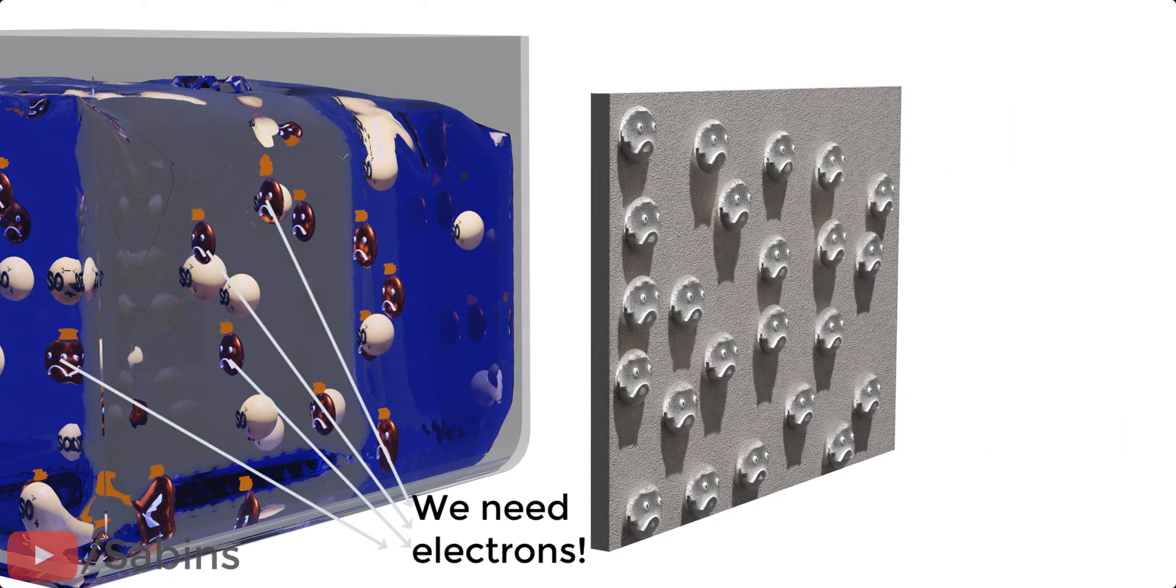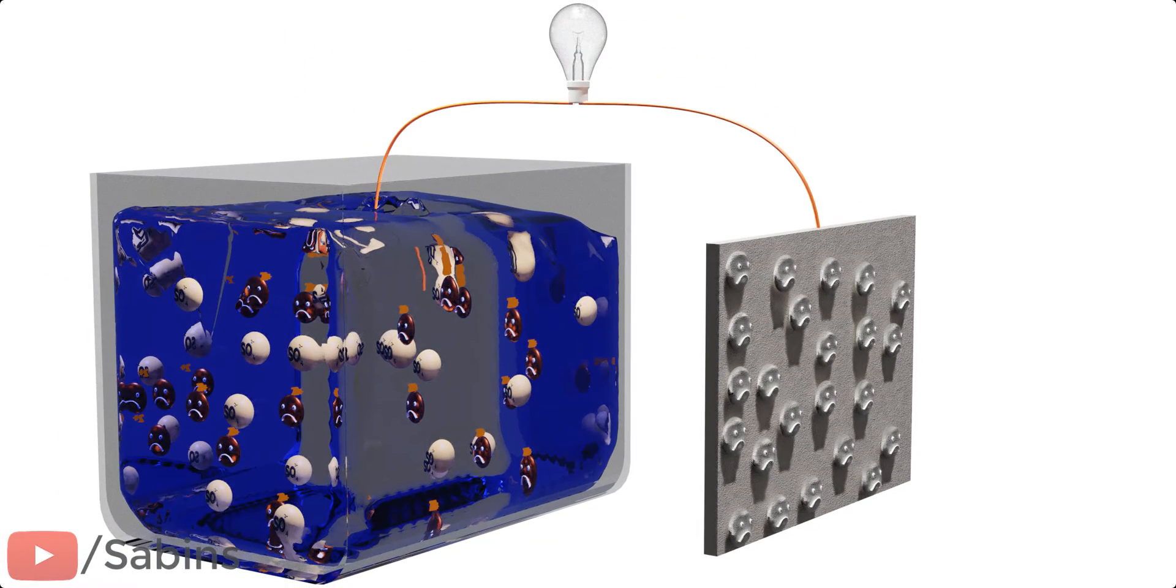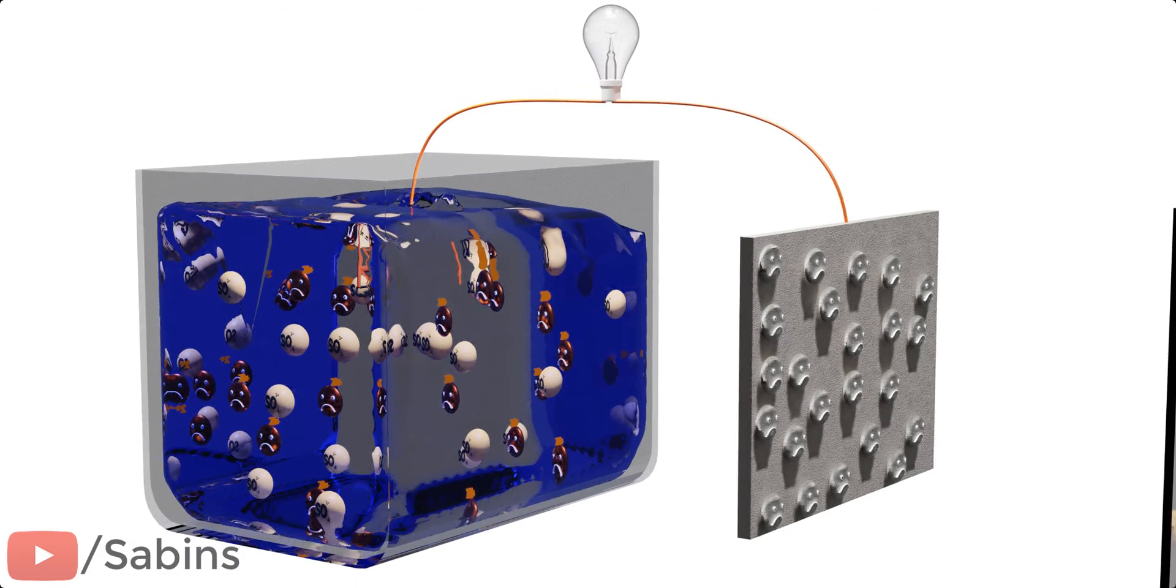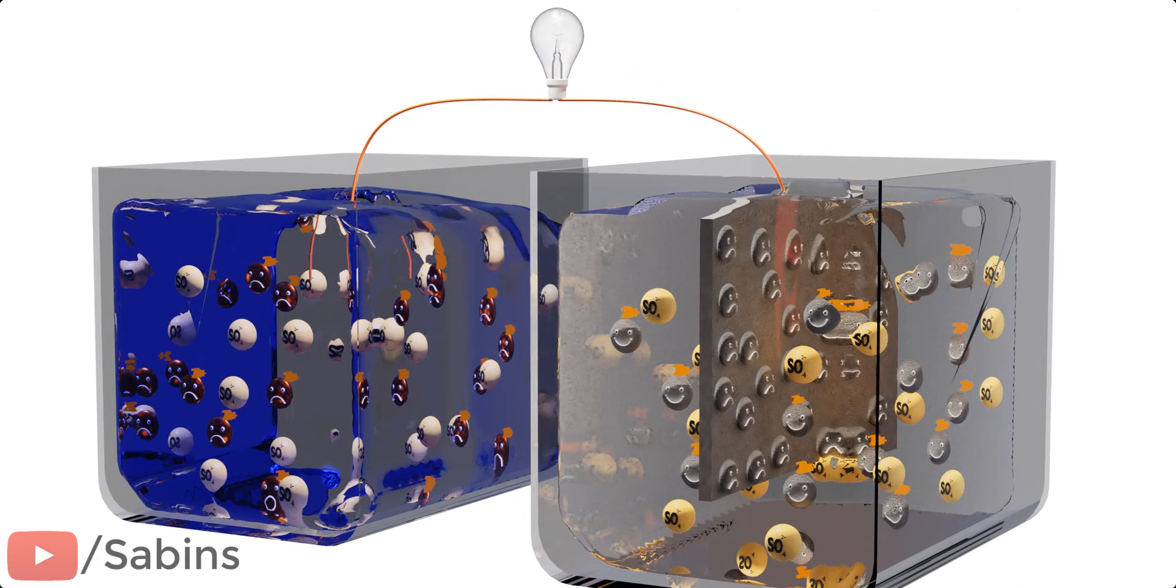The copper ions in the solution are starving for electrons. If we connect this solution and the metal bar together, obviously the zinc atoms in the bar want to donate their electrons. But after donating, zinc becomes zinc ions. Ions cannot stay in a metal. So, let's introduce another aqueous solution around the zinc metal bar, just to accommodate these zinc ions.